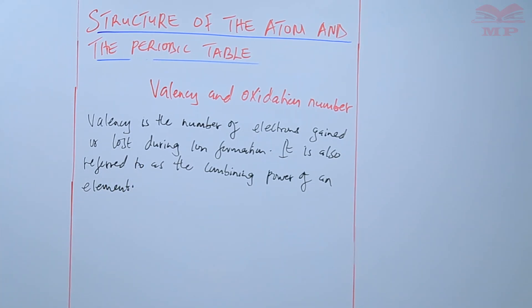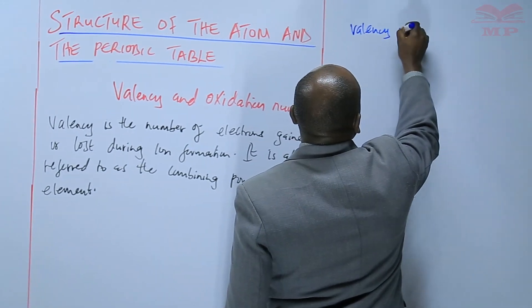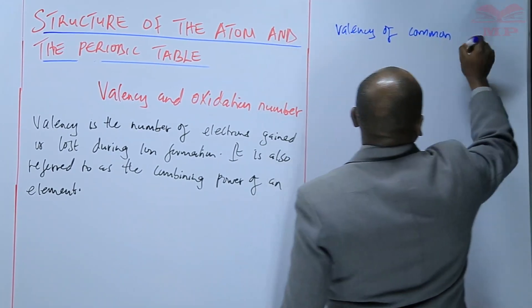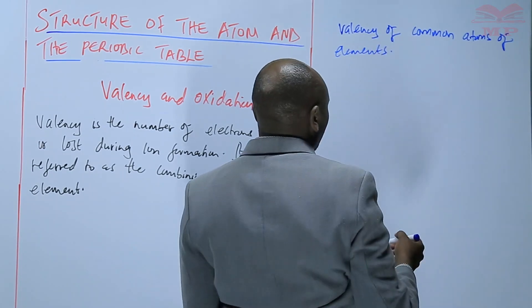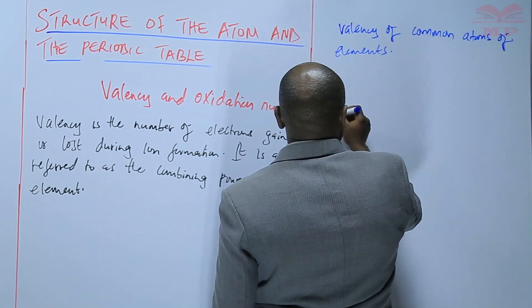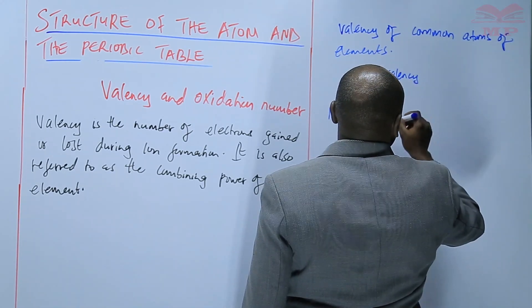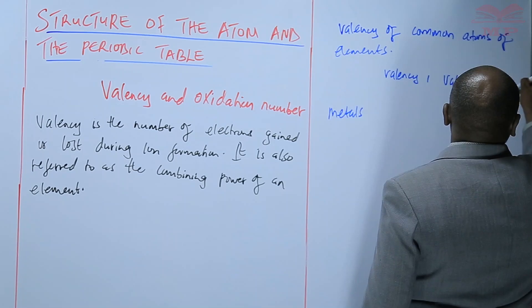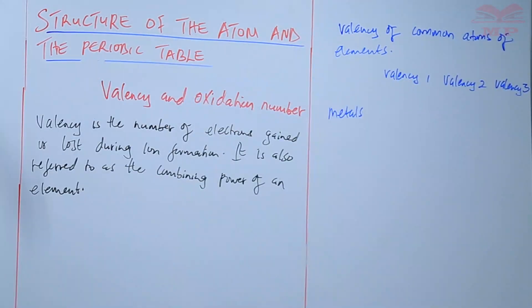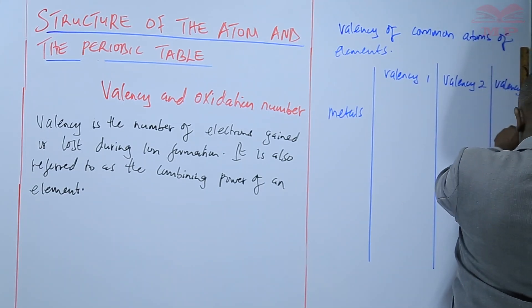We are going to discuss the valency of common elements — common atoms of elements. For metals, there are those that have a valency of 1, those that have a valency of 2, and those that have a valency of 3.